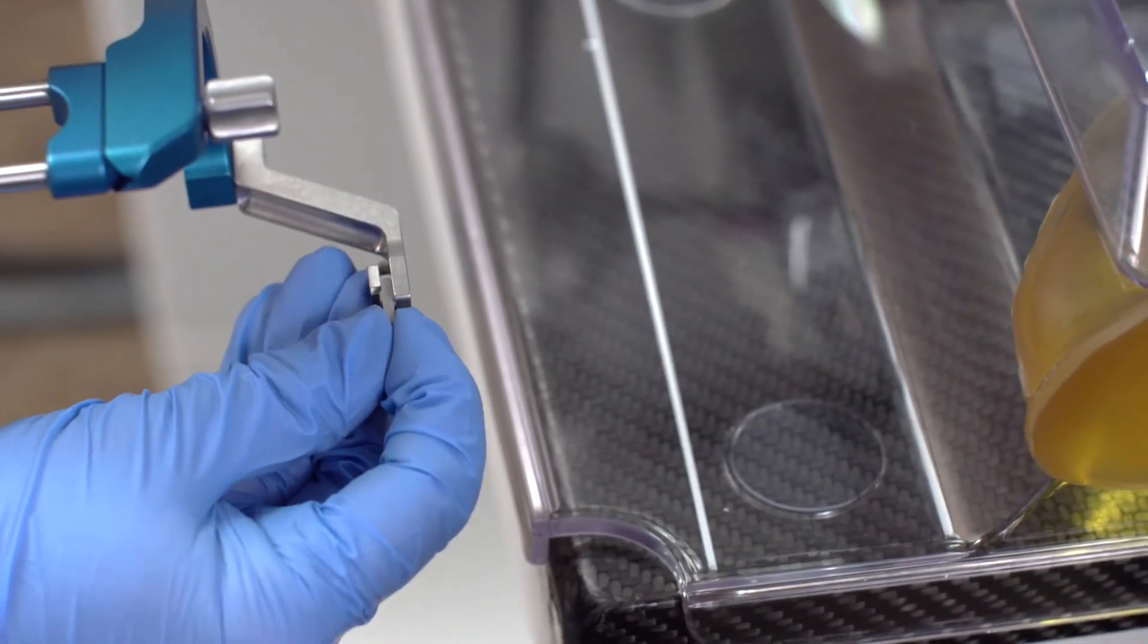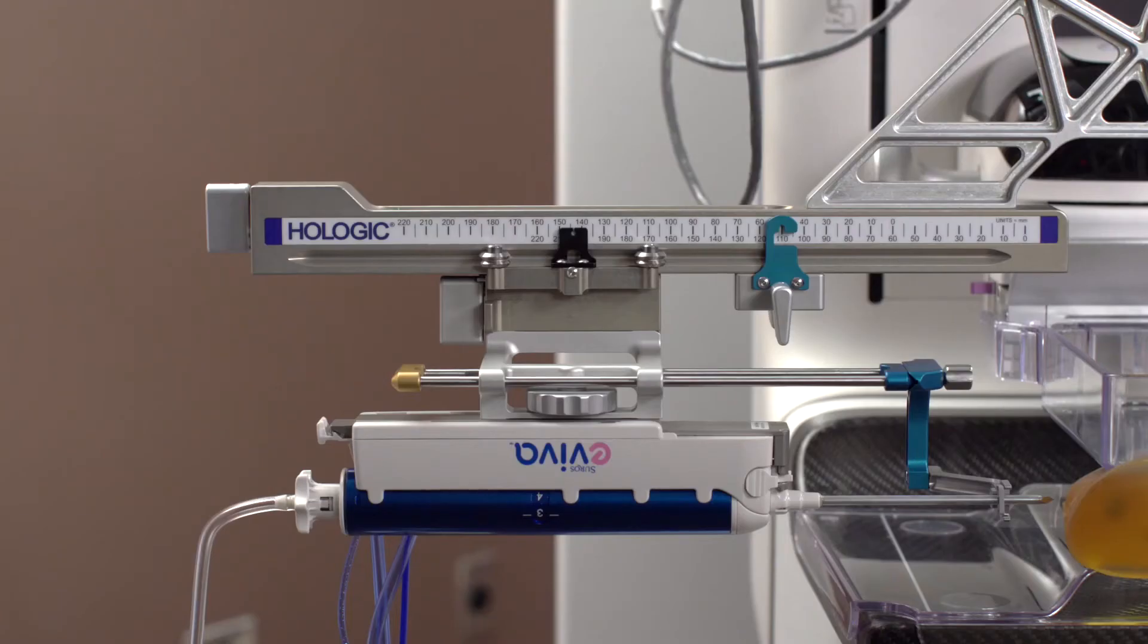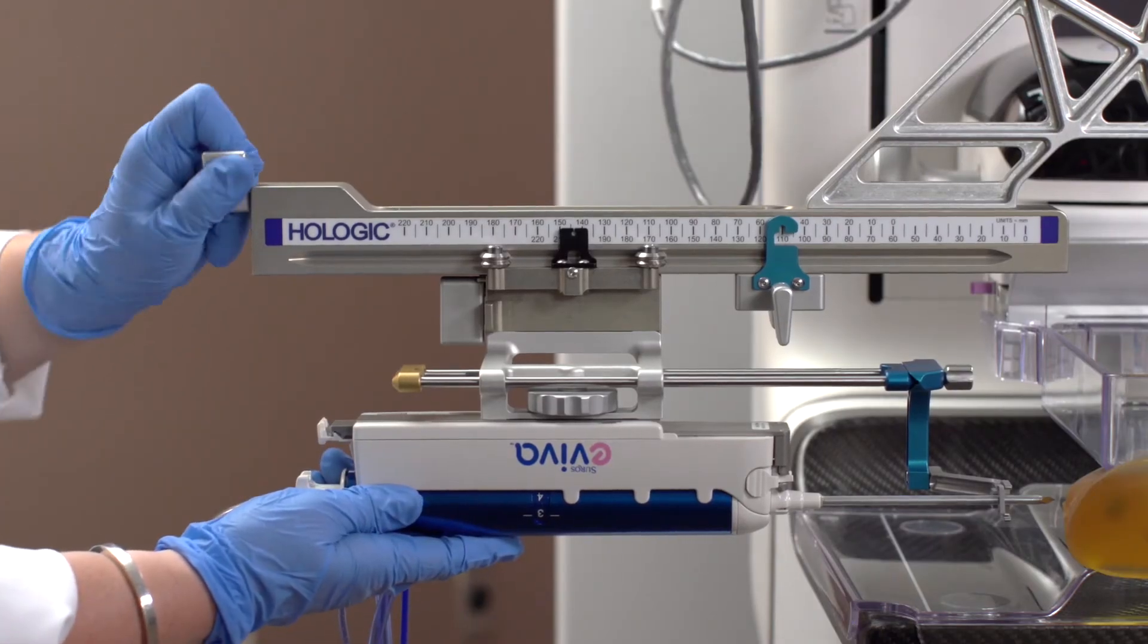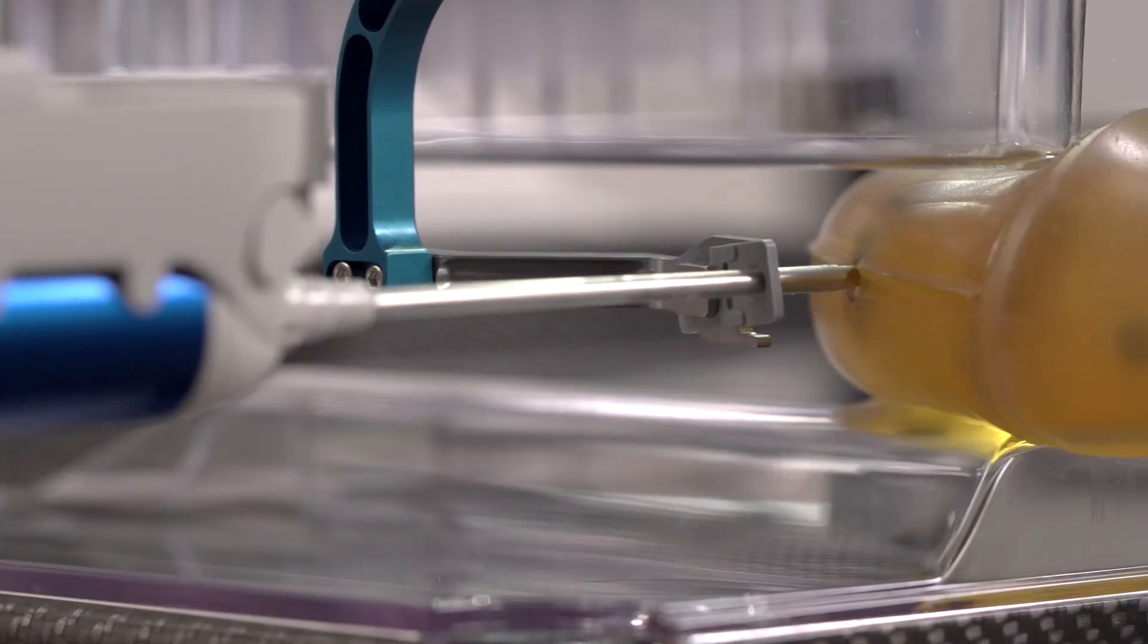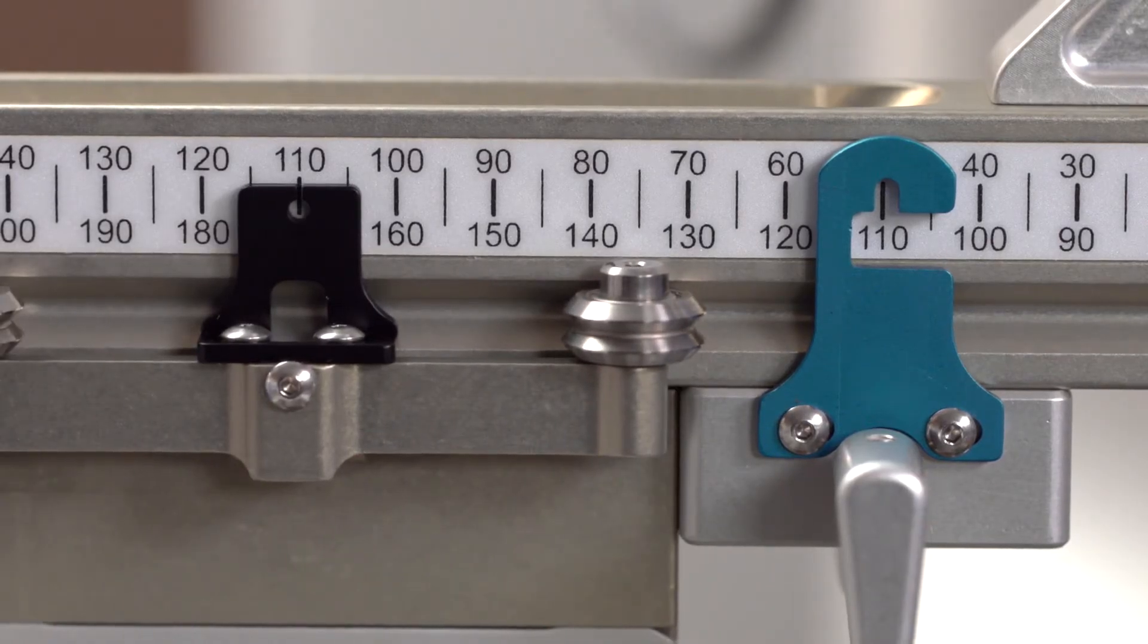Attach the needle guide and load the biopsy needle onto the lateral arm. The breast is numbed, a skin nick is made, and the needle is manually inserted into the breast, stopping at the lateral X marked with the depth stop.